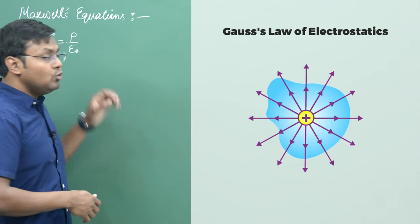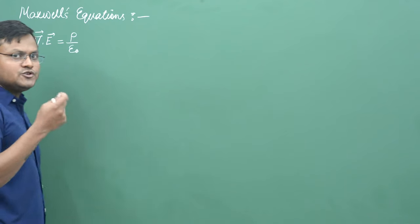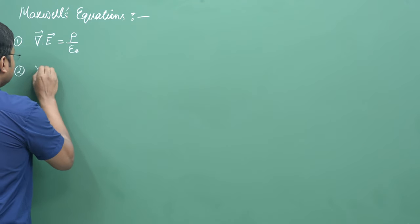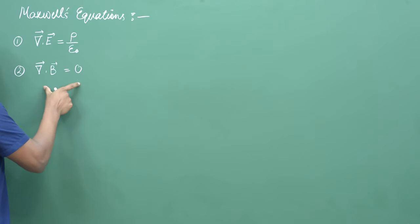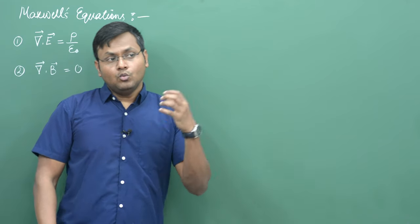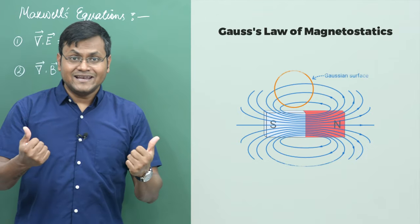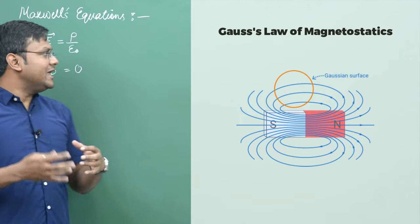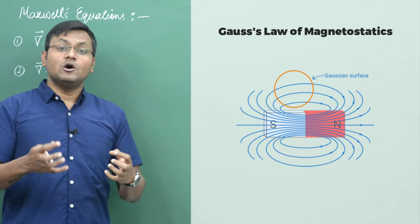The second equation is sometimes also called the Gauss law of magnetostatics, which is essentially the divergence of magnetic field equal to zero. It simply means that magnetic monopoles do not exist. Whenever there is a magnetic field line, it is always associated with a dipole — the presence of a north and a south pole. So if we calculate the net outflow of a magnetic field from a closed surface, it always comes out to be zero.